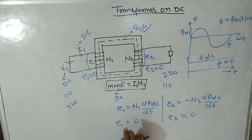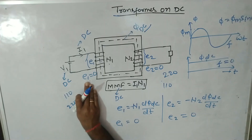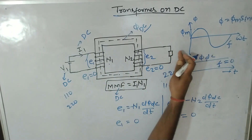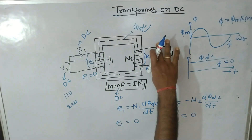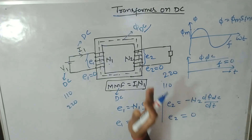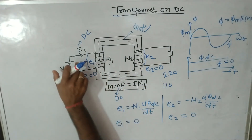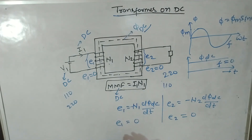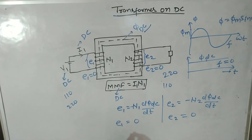We can say that there is no transformation action happening in the transformer. The secondary induced voltage — that is, the secondary voltage — is equal to zero. This means the step-up and step-down process is not happening in the transformer when the input is given as a DC voltage source. This is one of the most important facts about applying DC to a transformer.